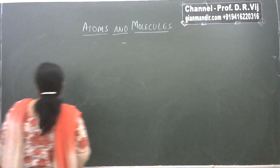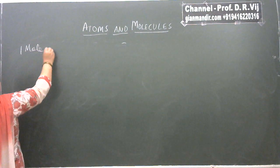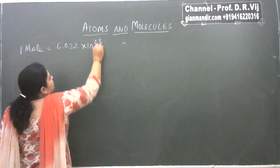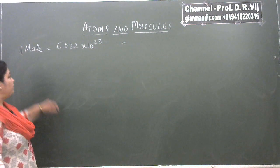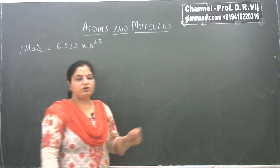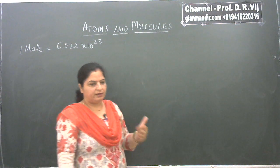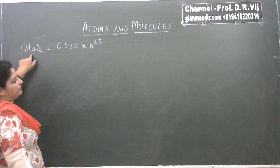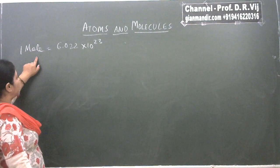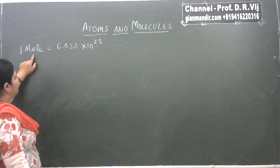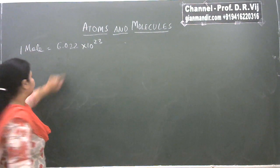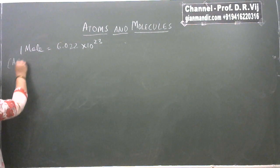1 mole is equal to 6.022 × 10²³ number of particles. If you say 1 mole of atoms, it means 6.022 × 10²³ atoms; 1 mole of molecules means that many molecules; 1 mole of ions means that many ions. That's why 1 mole is also known as a chemist's dozen.